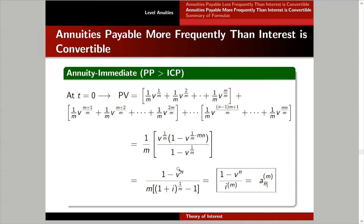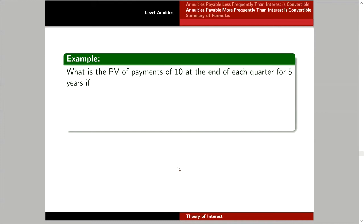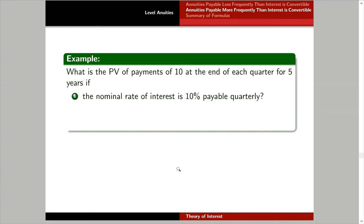Let's have some examples. This is a basic example to demonstrate how to deal with these problems using the second method. You can verify the numerical values using method 1. We are going to get the present value of payments of 10 at the end of each quarter for five years, given three different interest rates. For the first: i upper 4 equals 10%. Notice the payment period is the same as the interest conversion period — both quarterly.